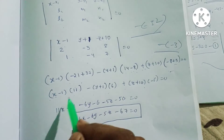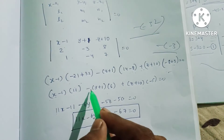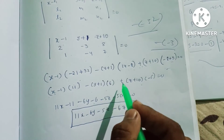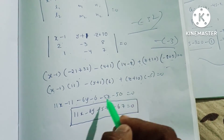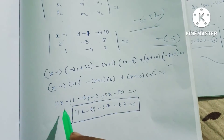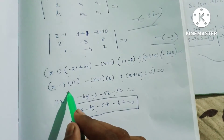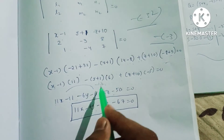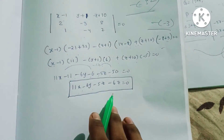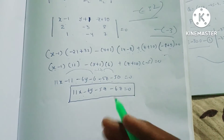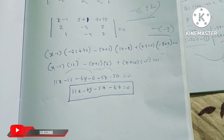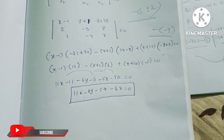Expanding: (x−1)(−3×7 − 8×(−4)) − (y+1)(2×7 − 8×1) + (z+10)(2×(−4) − (−3)×1) = 0, giving 11(x−1) − 6(y+1) − 5(z+10) = 0, which simplifies to 11x − 6y − 5z − 50 = 0. This is the equation of the plane. Please like, share, and subscribe to the channel.